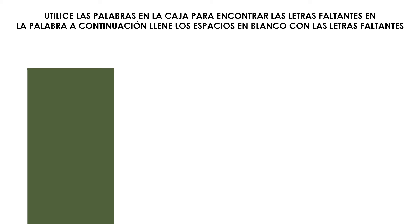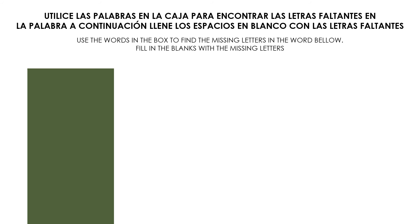Utilice las palabras en la caja para encontrar las letras faltantes en la palabra a continuación. Llena los espacios en blanco con las letras faltantes. Use the words in the box to find the missing letters in the word below. Fill in the blanks with the missing letters.